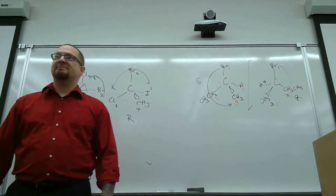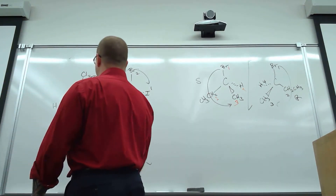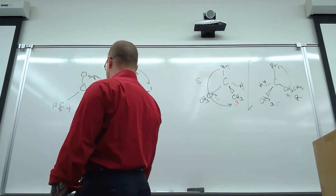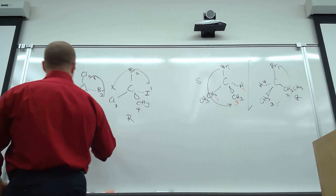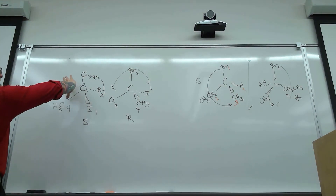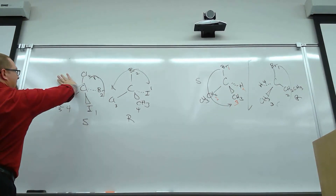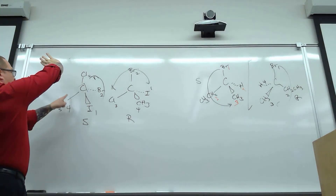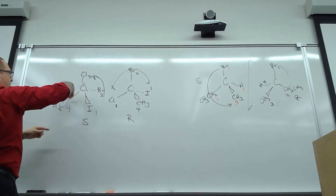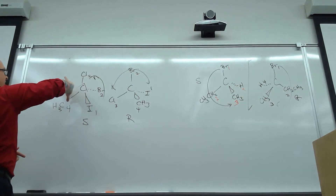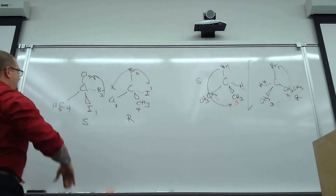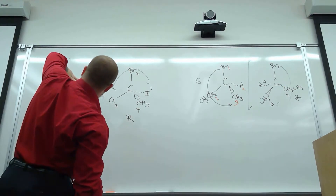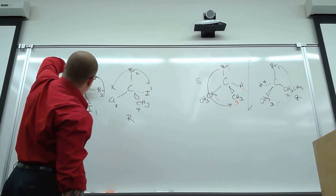A question about how to determine if two drawn structures are the same compound or enantiomers: one approach is to redraw so three groups align and check if the fourth does too. Another approach is to simply assign R or S to each independently — if both are R they're the same, if both are S they're the same, if one is R and one is S they're enantiomers.